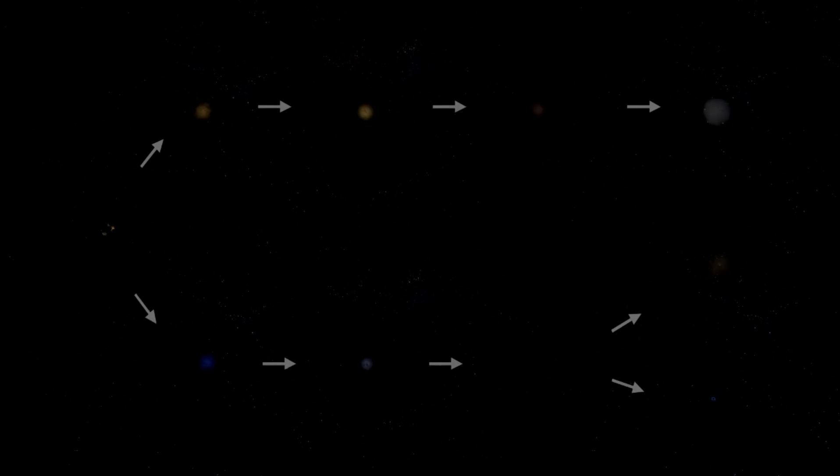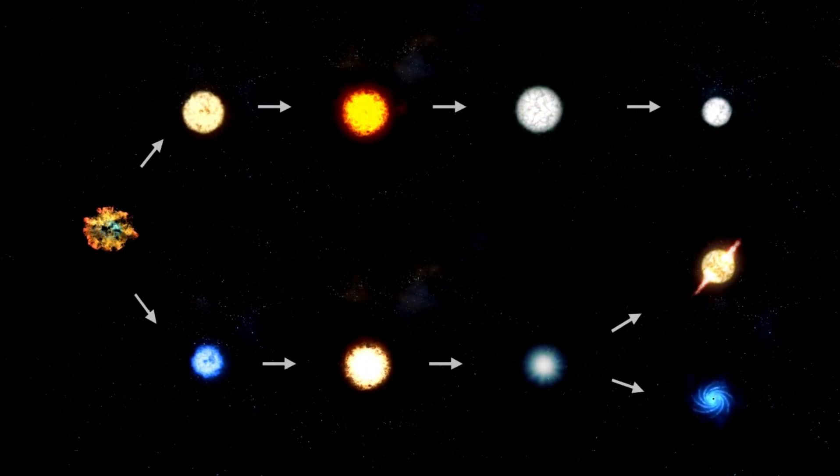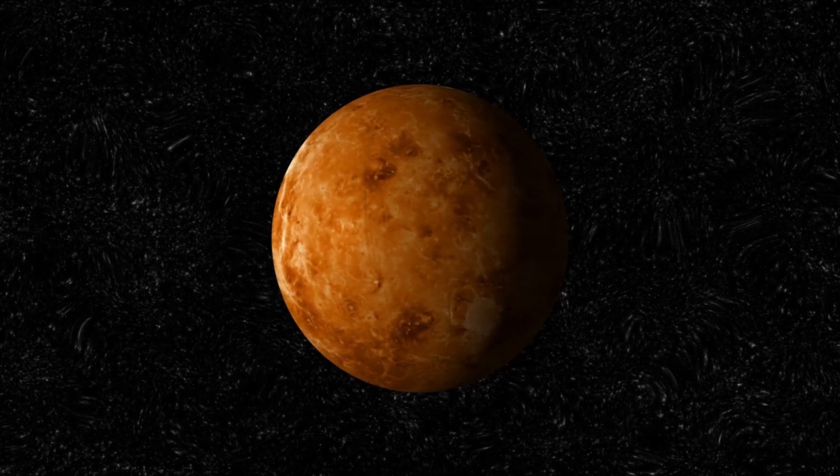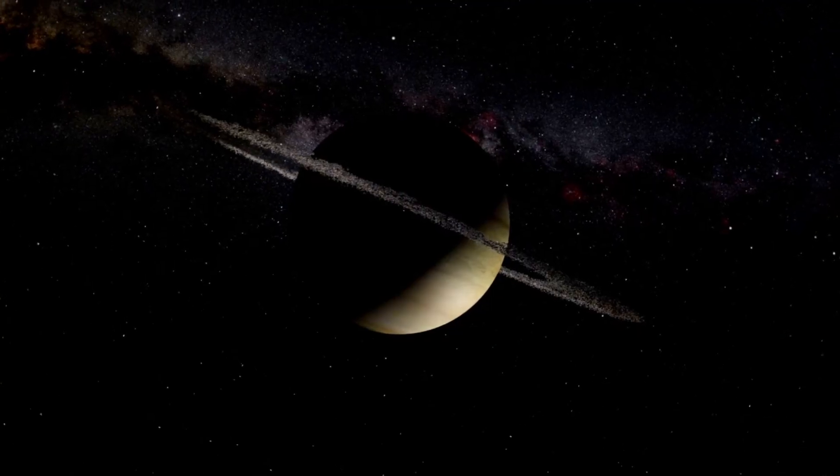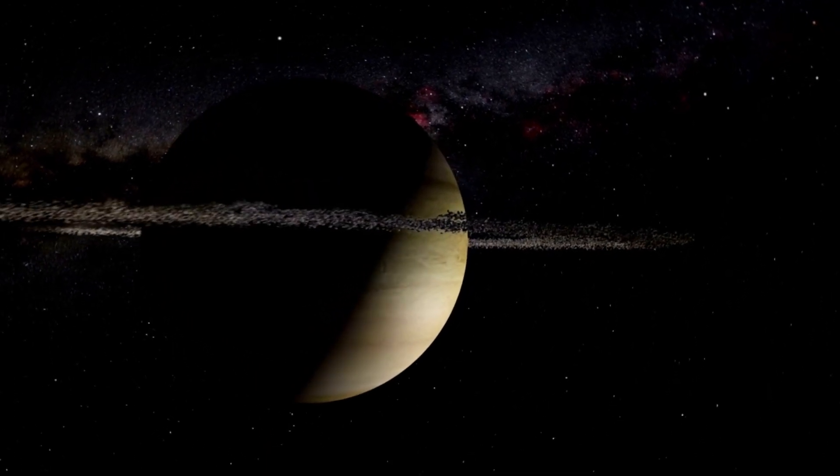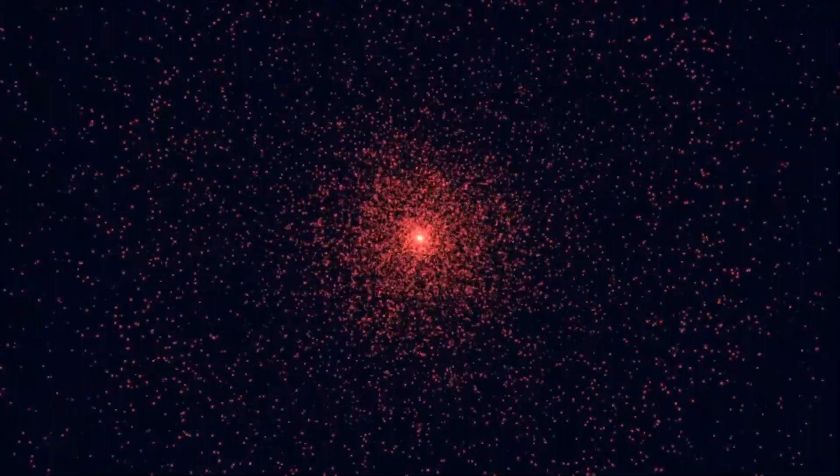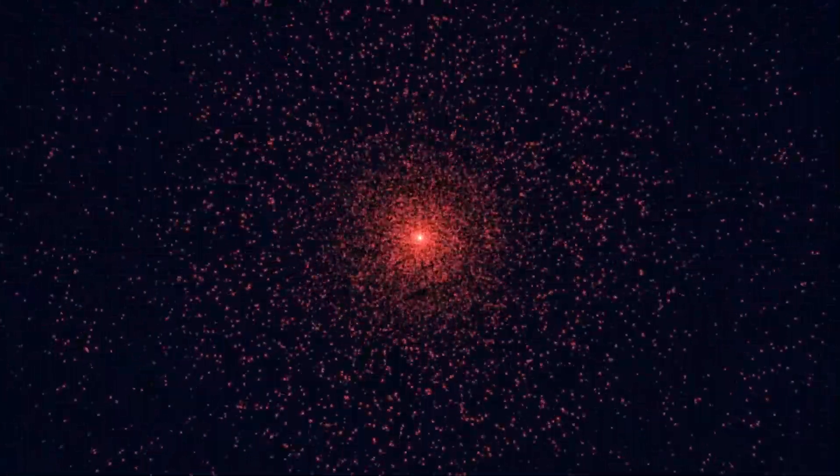The system is made up of the enormous Alpha Centauri star system, which comprises three stars: Alpha Centauri A, Alpha Centauri B, and Proxima Centauri. The giant stars of the system, Alpha Centauri A and B, are comparable to our sun, while Proxima Centauri is a much smaller, cooler pink dwarf star.